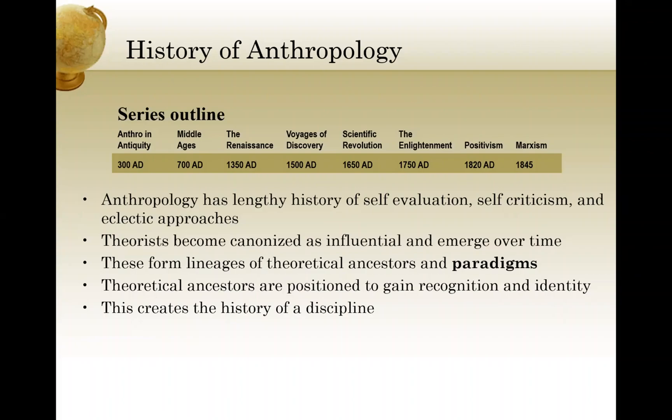It's a lengthy series and it encompasses much of anthropology's unique characteristic of continuous self-evaluation, self-criticism, and eclectic approaches to reflecting on its own discipline — what is the purpose of the discipline and where do we want it to go. You'll see that certain theorists through time become canonized as influential and emerge as framing the work of their generation. These form lineages of theoretical thought that become our ancestors, and their work forms paradigms that influence the scientists around them as well as the next generation of thinkers as those paradigms shift through time.